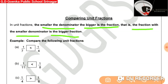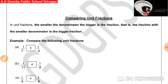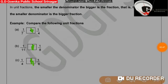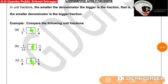Let us take some examples. For 1/7 and 1/4, both are unit fractions. The fraction with the smaller denominator, that is 1/4, will be the bigger fraction. Therefore, 1/4 is greater than 1/7.